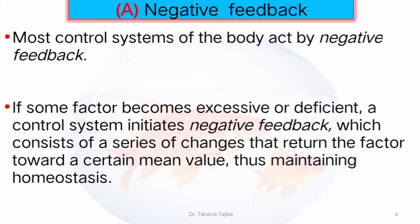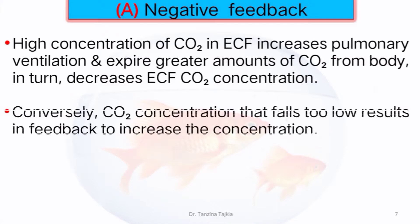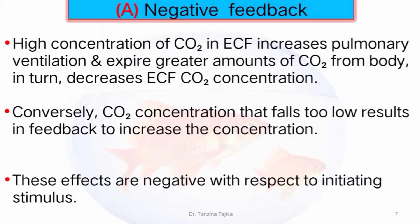If some factor becomes excessive or deficient, a control system initiates negative feedback, which consists of a series of changes that return the factor towards a certain mean value, thus maintaining homeostasis. For example, high concentration of carbon dioxide in extracellular fluid increases pulmonary ventilation and expires a greater amount of carbon dioxide from the body, which in turn decreases extracellular fluid carbon dioxide concentration.